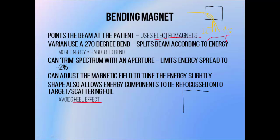Linacs produced by Varian Medical Systems tend to use a 270-degree bending magnet instead, so it moves the incident electron beam through three quarters of a circle in order to point it at the patient rather than just a 90-degree bend. This does separate the beam somewhat according to energy, but the 270-degree bending design allows us to refocus these components onto one point on the x-ray target or electron scattering foil. So there is no heel effect and they are focused on a very small point, which allows us to obtain a very sharp beam edge.